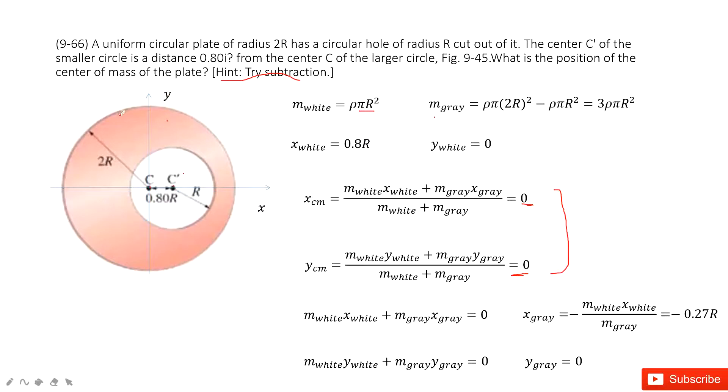And the mass for this green part, we can use the huge circular minus this small circular, so this one. So, it's 3πR².